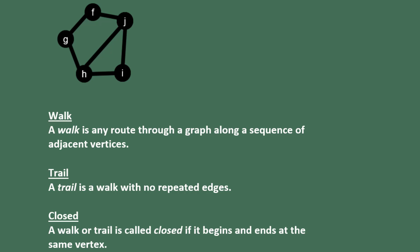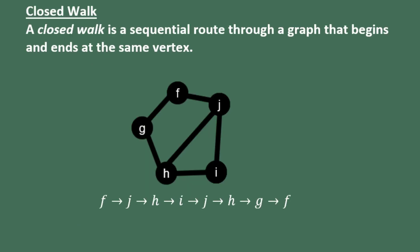Another term that we will use is the term closed. A walk or trail is called closed if it begins and ends at the same vertex. So let's take a look at an example of a closed walk.